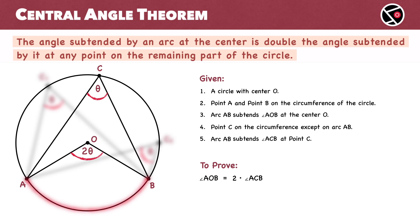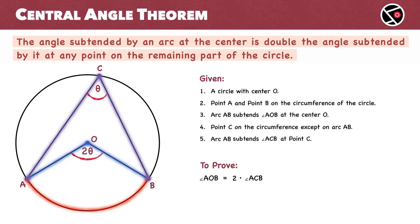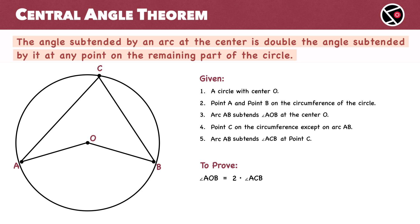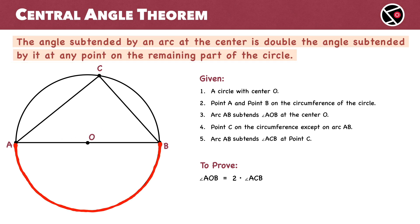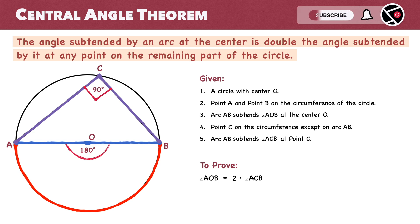Now let's look at arc AB in different cases. In this example, AB is a minor arc and the angle at the center O is twice the angle at point C. This still holds if AB is a semicircle. In that case, AB would be the diameter, making angle AOB equal to 180 degrees, and angle ACB would then be half of 180 degrees — that is, a right angle of 90 degrees. The angle subtended by a semicircle on any point on the circumference is always 90 degrees. This is an important conclusion, so be sure to remember it.